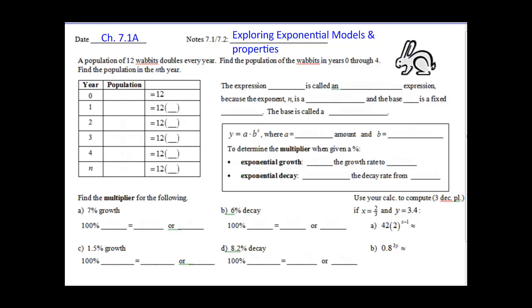A population of 12 wabbits doubles every year. We need to find the population of the wabbits in years 0 through 4 and find the population in the nth year. In other words, what's happening if I wanted to go 20 years down the line? So if it's doubling each year in year 0, we have 12. After the first year, it's supposed to have doubled, so double 12 and we get 24. After two years, we double again, so 24 doubles to 48. If we double in the third year, we get 96. And if we double that fourth year, we get 192.